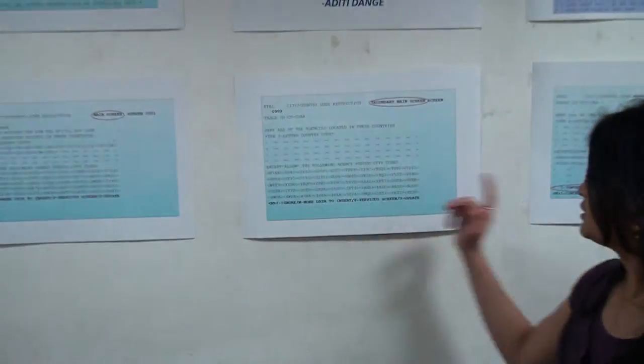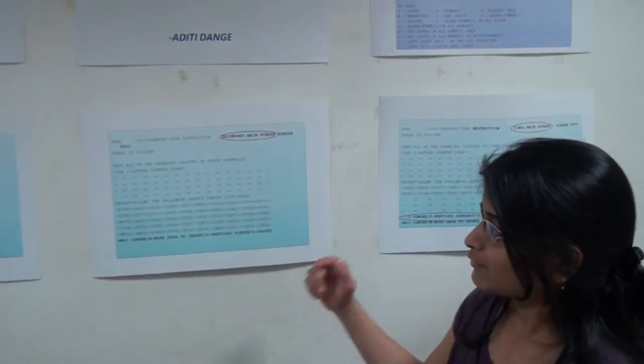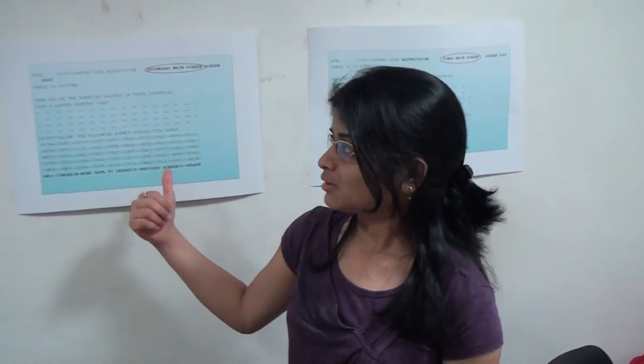Earlier, there were three screens which used to allow a total of 180 countries and 150 agencies, which was an inadequate number to accommodate customers' vast number of affiliate locations. Also, the only way to update new data was to replace the existing one.